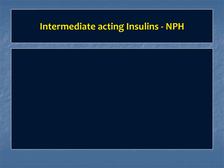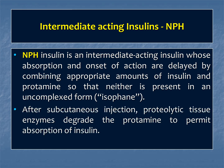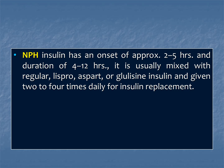The next group is intermediate-acting insulin, especially NPH. This is an intermediate-acting insulin whose absorption and onset of action are delayed by combining appropriate amounts of insulin and protamine — neither being present in uncomplexed (isophane) form. After subcutaneous injection, proteolytic tissue enzymes degrade the protamine to permit absorption of insulin. Onset of action is about 2 to 5 hours and duration up to 4 to 12 hours. It is usually mixed with regular, Lispro, Aspart, or Glulisine and given 2 to 4 times daily.